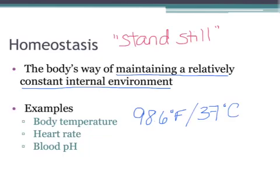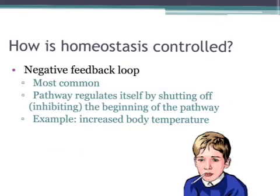Other things your body maintains include heart rate — it goes up if you're exercising but then comes back down — and even the pH of your blood, whether it's acidic or basic, is constantly maintained. So let's talk about how that happens. Homeostasis is maintained by a negative feedback loop. What happens is that the pathway regulates itself by monitoring and shutting off — inhibiting — the beginning of the pathway when certain events occur.